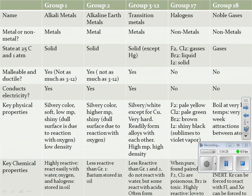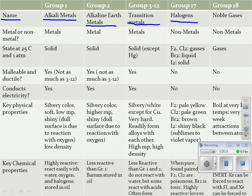Next are the characteristics of the different groups or families. You need to know that Group 1, the first family on the far left, is known as the alkali metals. Group 2 is the alkaline earth metals. Groups 3 through 12 are the transition metals. Group 17 elements are non-metals, also known as halogens. Group 18 are your noble gases, also non-metals.